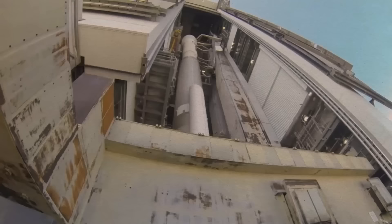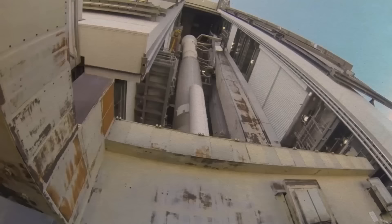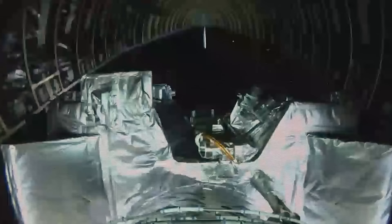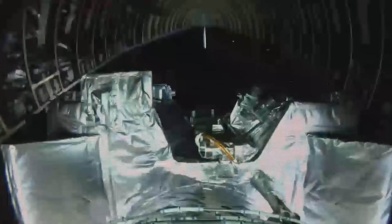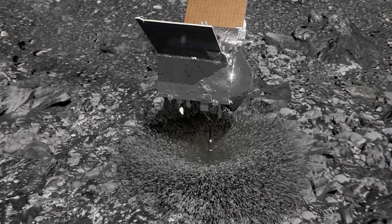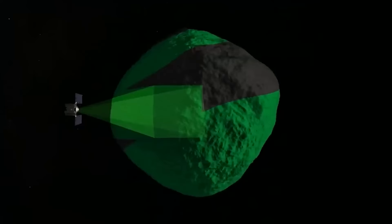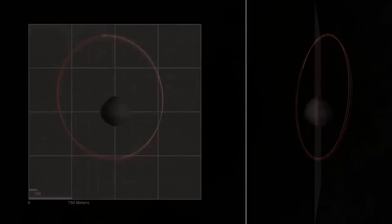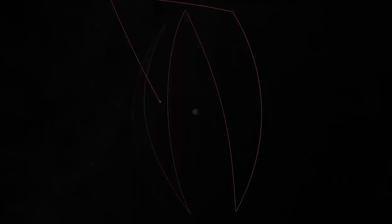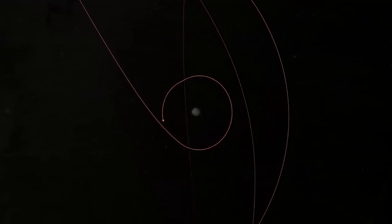OSIRIS-REx launched on September 8, 2016. It briefly returned home in September 2017 to complete a speed-boosting flyby of Earth. The probe arrived at Bennu on December 3, 2018. In the month following its arrival, OSIRIS-REx took detailed measurements of Bennu's shape and mass before precisely slipping into orbit. On this mission, the spacecraft set two records. First, Bennu is the smallest body a spacecraft has ever orbited, as the space rock has a diameter of 1,640 feet. Second, OSIRIS-REx performed the closest orbit ever of a small body at just one mile from the surface.